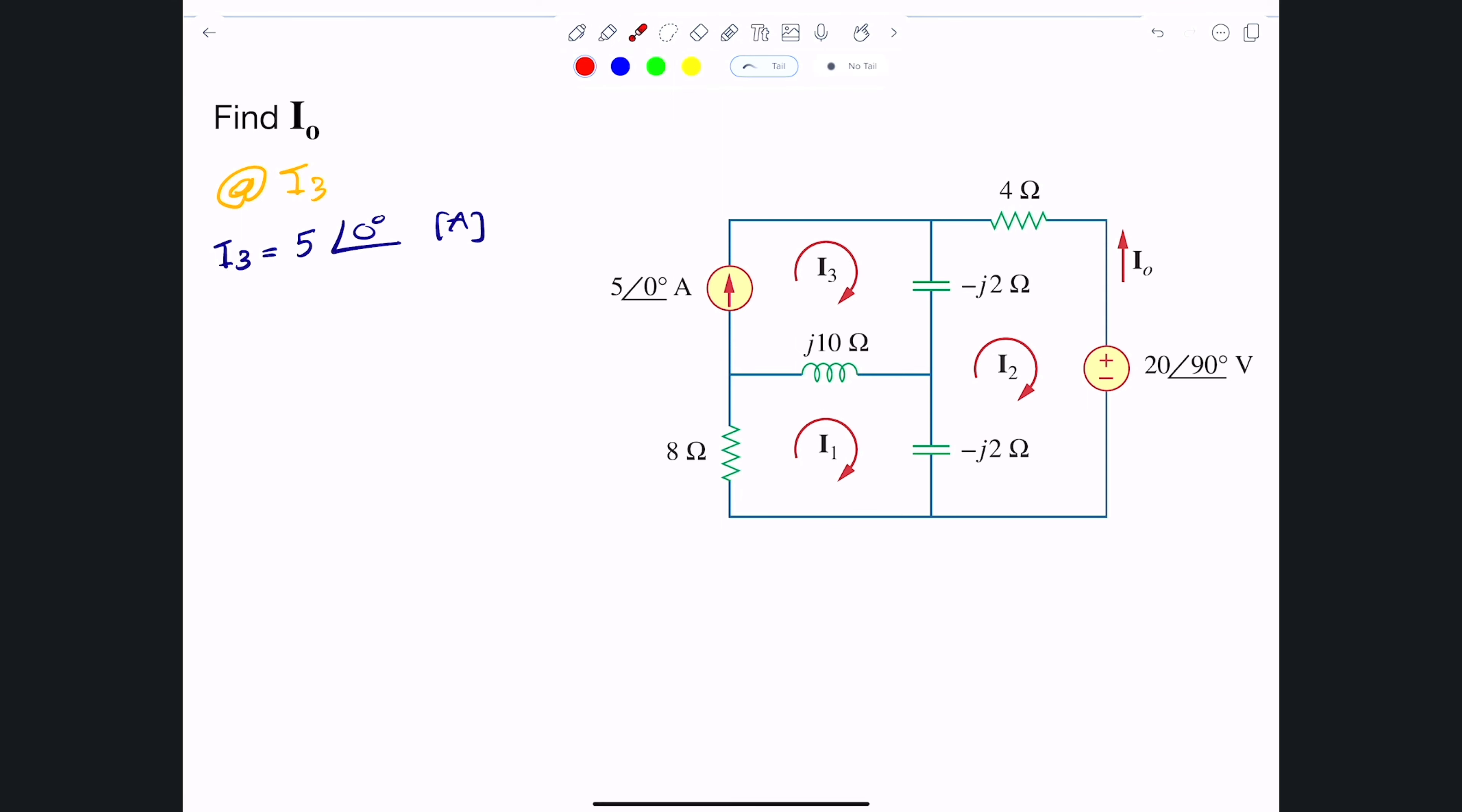Now I'll write the equation for I1. So I1 in here basically is 8Ω times I1 plus j10Ω times (I1 minus I3), well I3 is just 5, that's what I'm saying we'll just substitute it by its value, plus -j2Ω, and that's here I1 minus I2, and that equals zero.